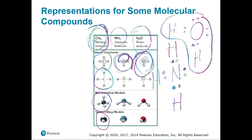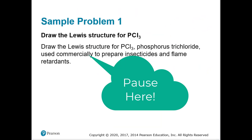In NH3, there's one nitrogen and three hydrogens, so N is our central atom. In H2O, there are two H's and one O, so O is the central atom because there are fewer of them. Pause the video and try to draw the Lewis structure for PCl3.